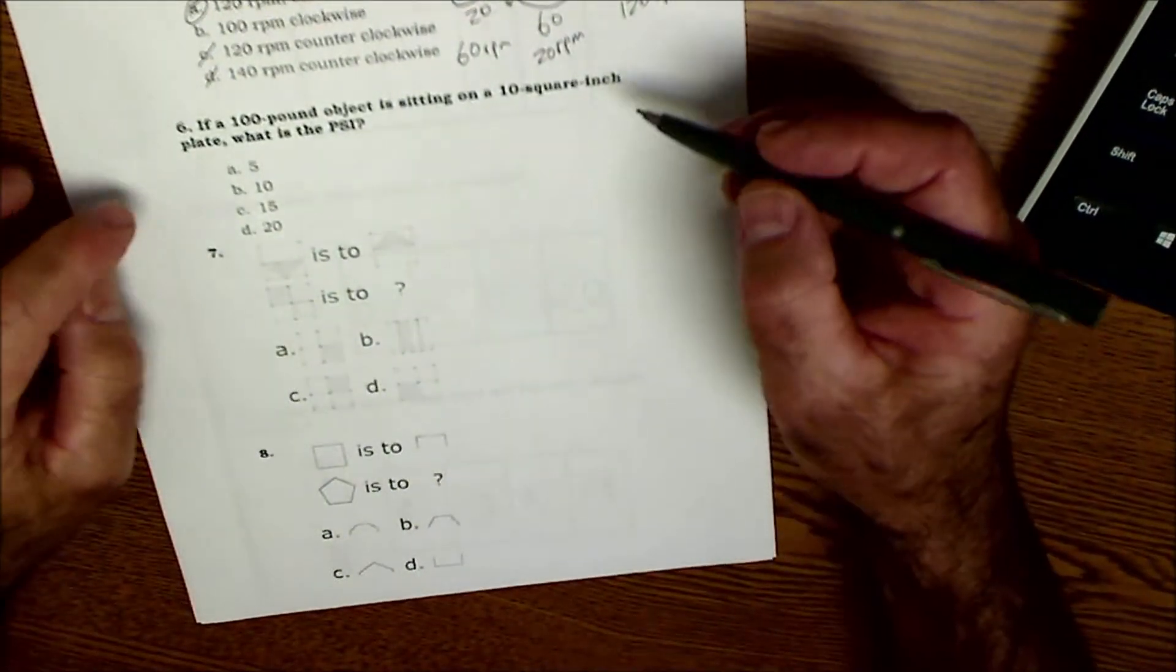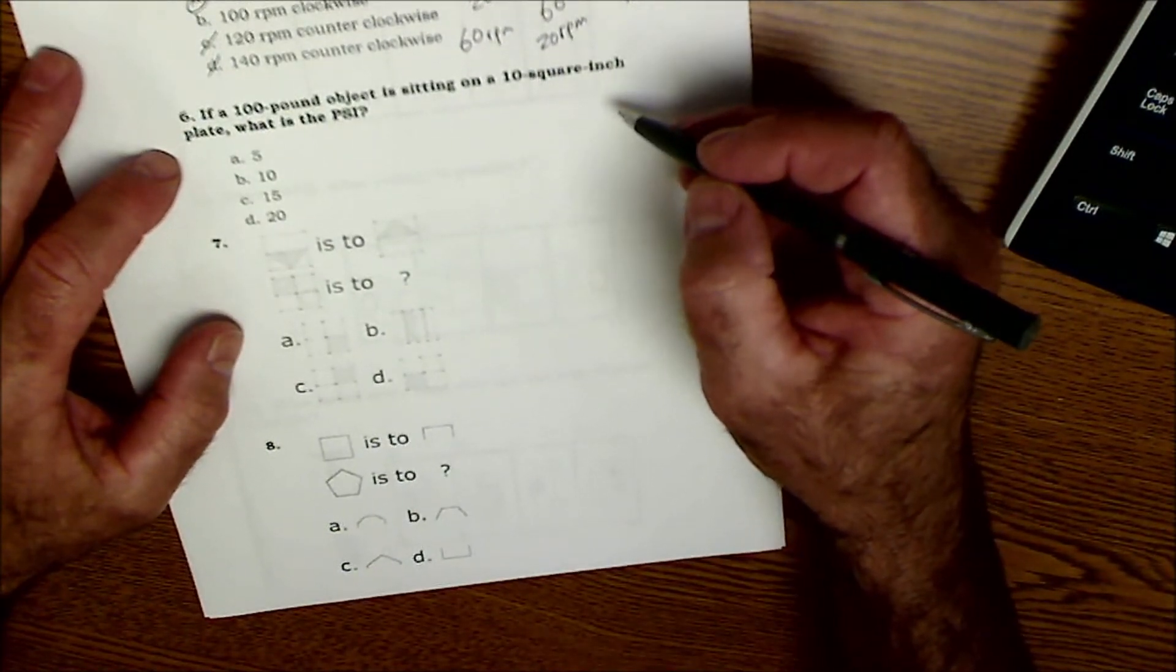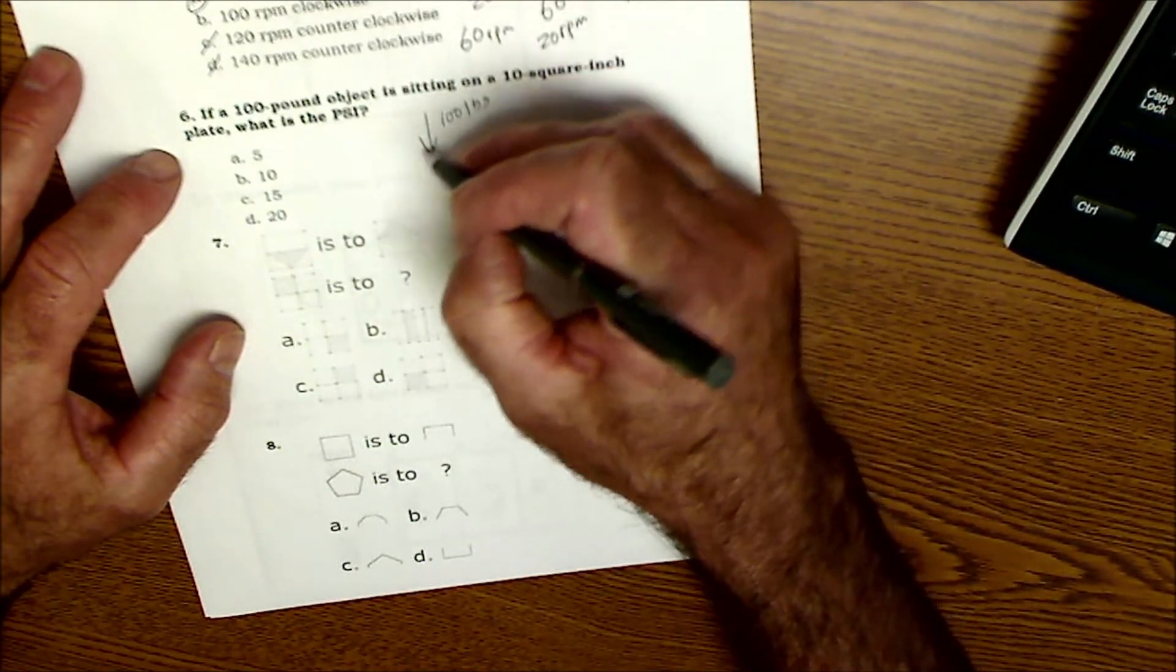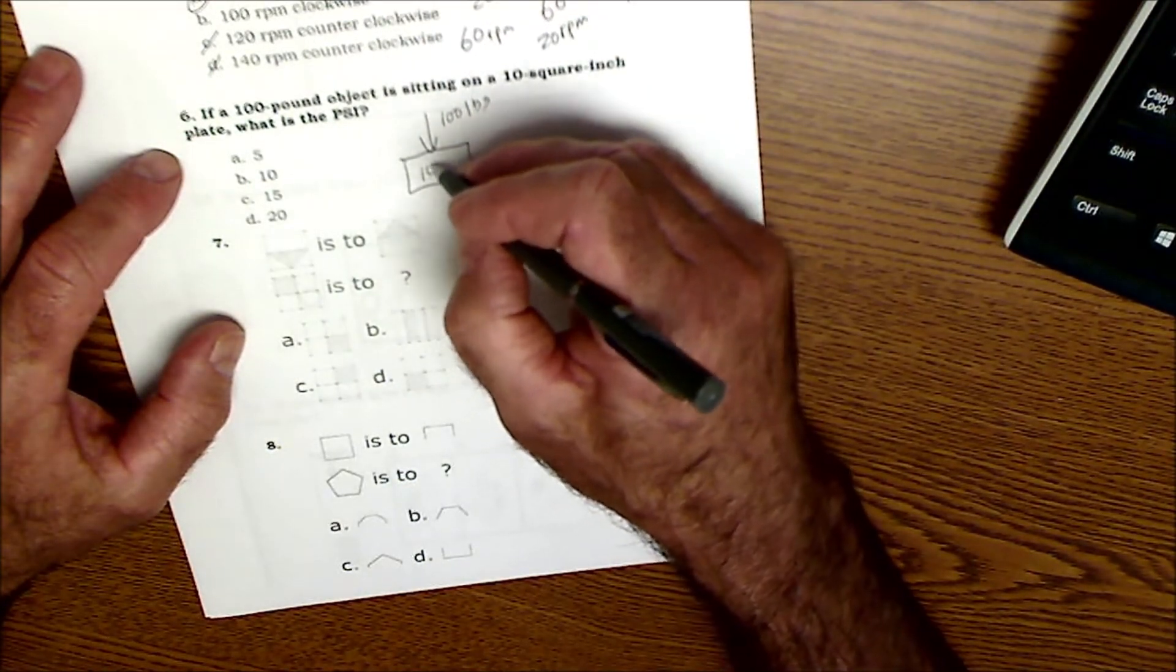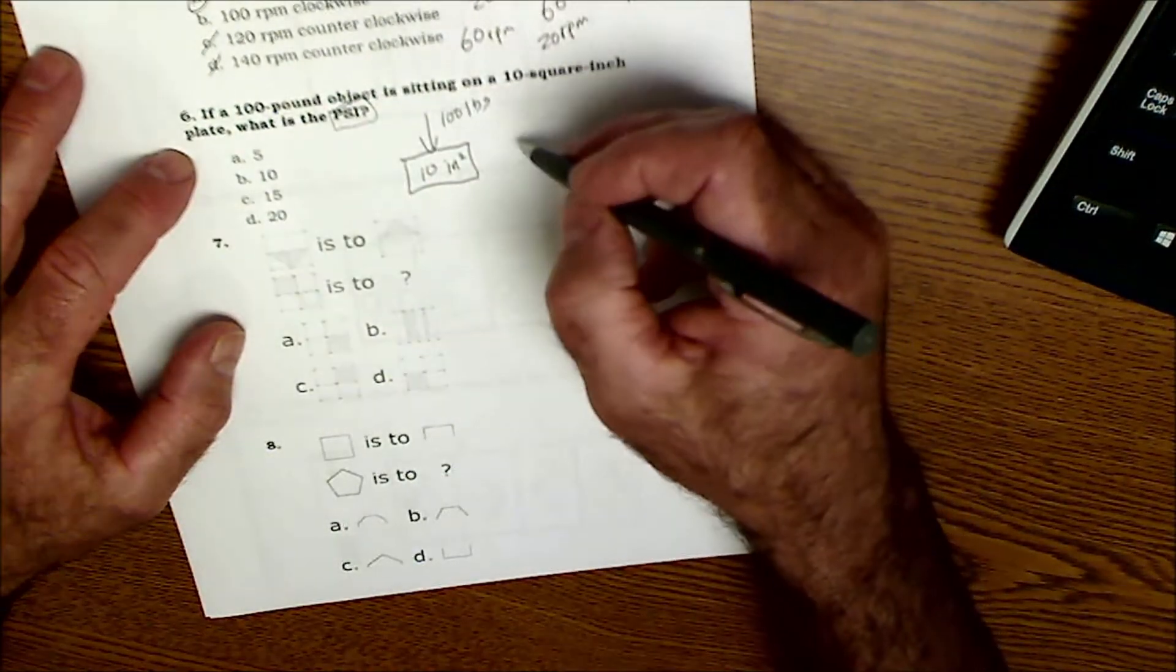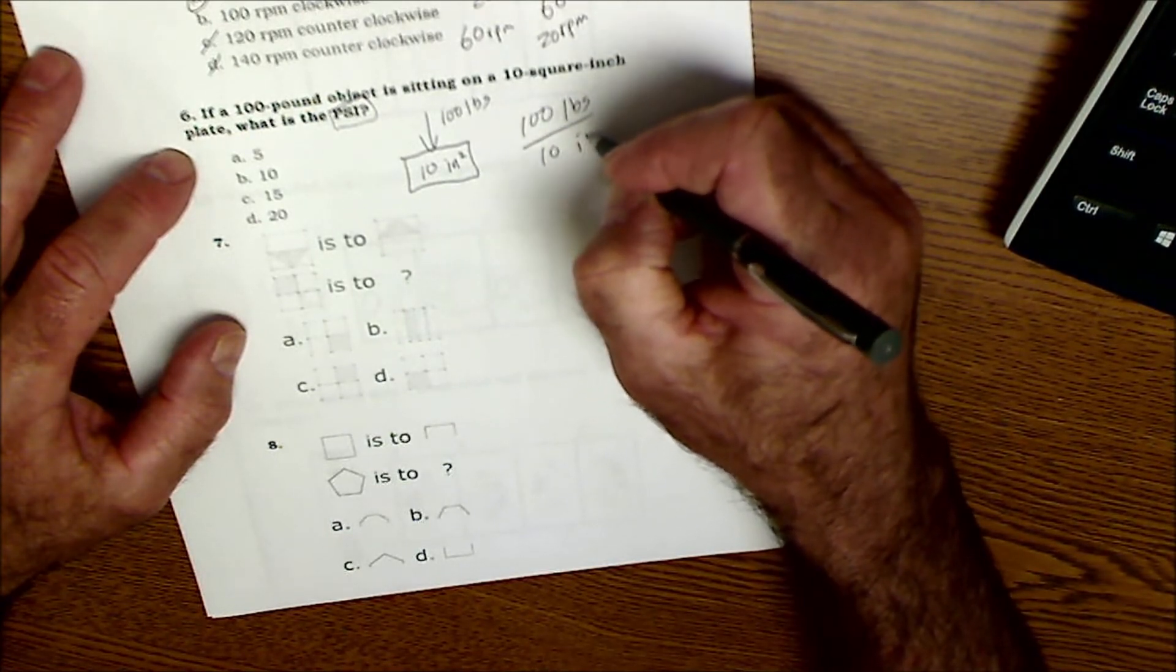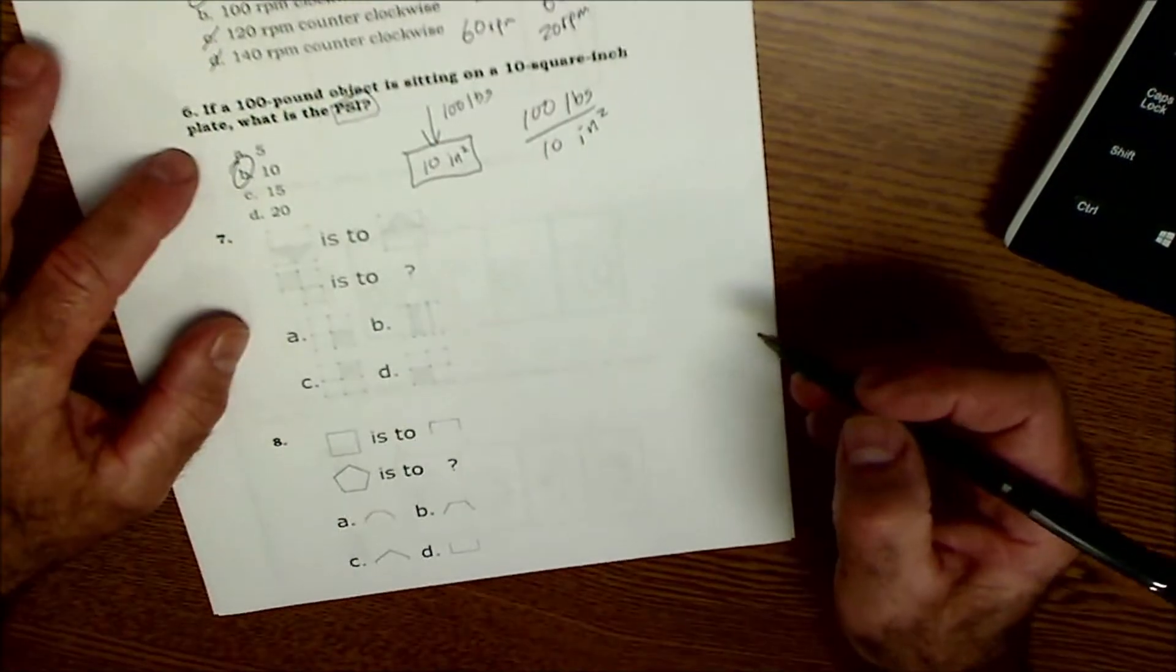All right, let's move on to number 6. If a 100-pound object is sitting on a 10-square-inch plate, what's the PSI? So that's pounds per square inch. So I've got 100 pounds of weight pushing down here on the 10 square inches, so 10 square inches. Well, I'm looking for pounds per square inch. So it's 100 pounds per 10 square inches or 10 pounds per 1 square inch.